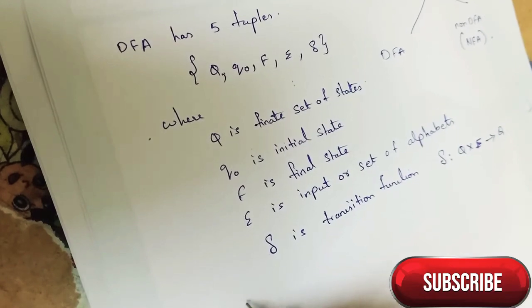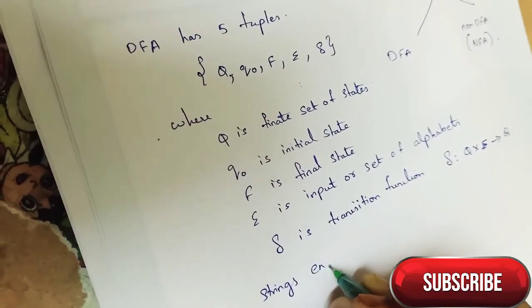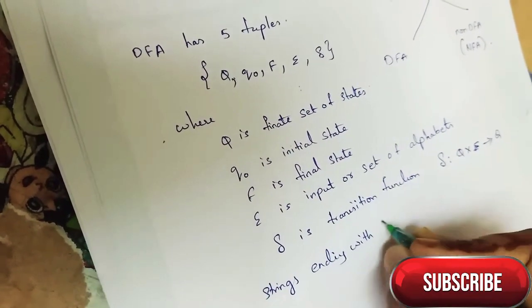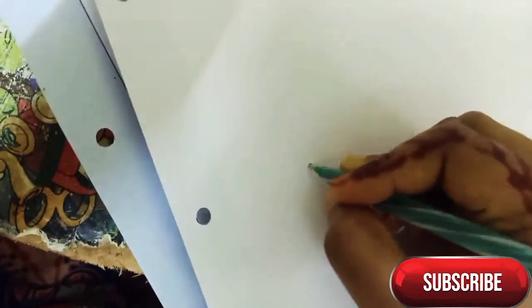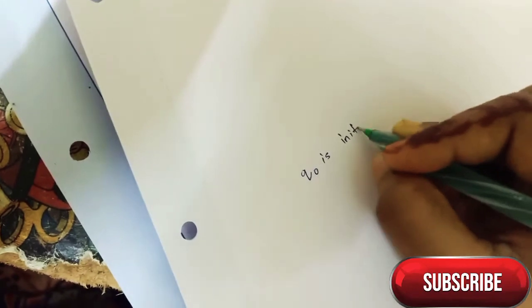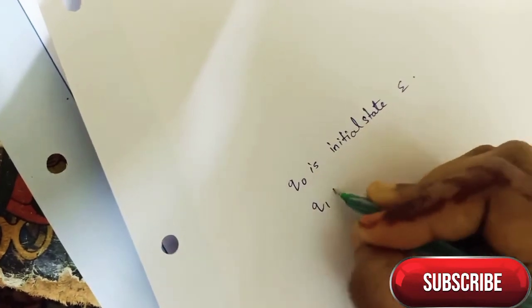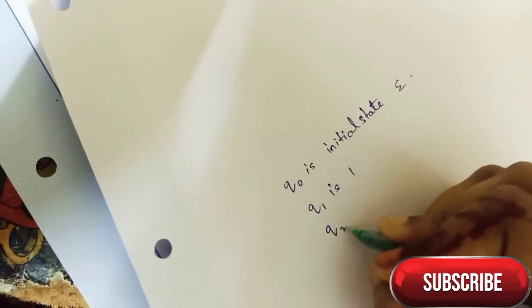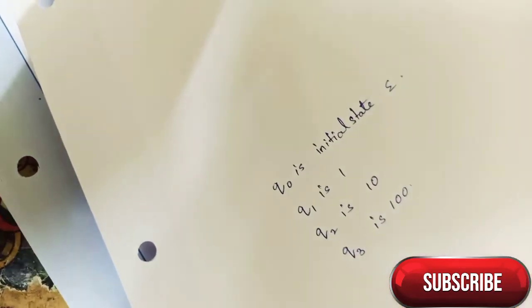Now if we want to take strings like 100, for example, here Q naught is initial state. Q1 is 1, Q2 is 10, and Q3 is 100. Now we have to draw transition table.